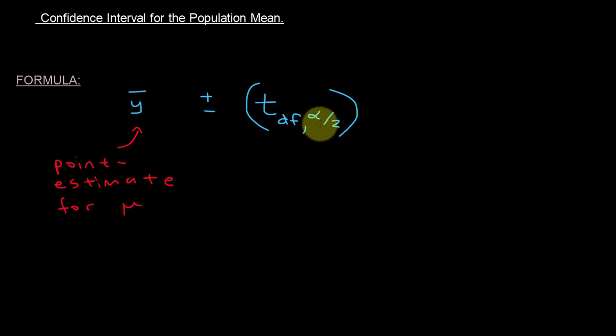And we're also using alpha. Alpha is this fishy looking Greek letter. Alpha over 2. That is an area in the tails of the t distribution, but it's split between the two tails.